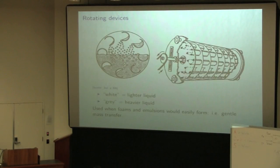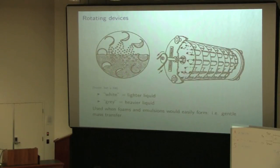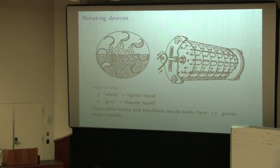The last unit type is used when you're dealing with two solvents that tend to foam or form emulsions easily — this is a very gentle way of contacting the fluid. The lighter liquid and heavier liquid fill the entire rotating device. As it rotates counter-clockwise, the lighter phase is pulled into the heavier phase, and lighter phase drops move up. In the longitudinal direction we have countercurrent flow — solvent coming in at one end and extract pulled off, while feed comes in from the other side and raffinate leaves.